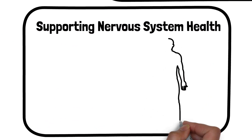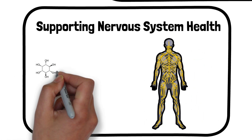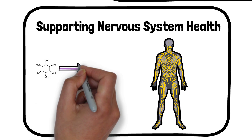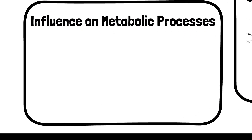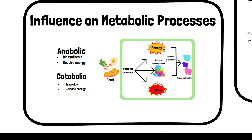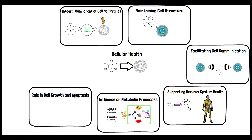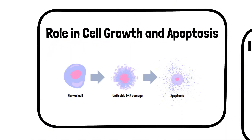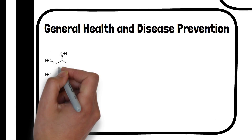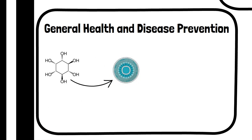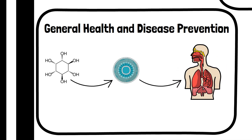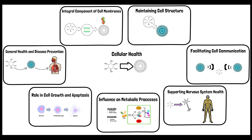Inositol is particularly important in the nervous system, contributing to the health and function of nerve cells. Proper functioning of neurons is critical for transmitting nerve signals, and inositol's role in membrane health supports this process. Cell membranes are also sites for various metabolic activities, and inositol's presence in these membranes supports efficient cell function. Inositol is also involved in cellular processes like cell growth, division, and apoptosis — programmed cell death — which are crucial for maintaining cellular health and preventing abnormalities and disease.